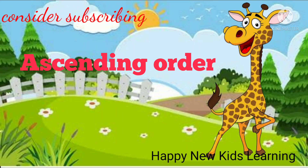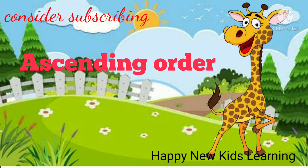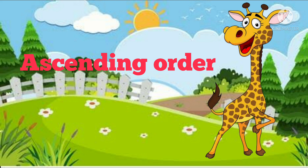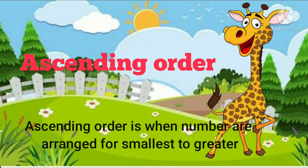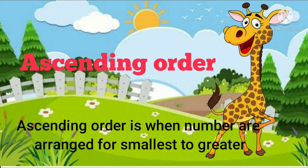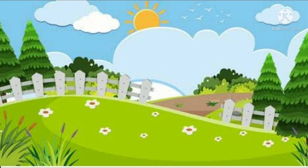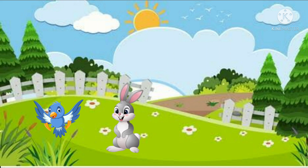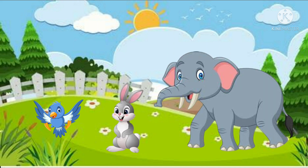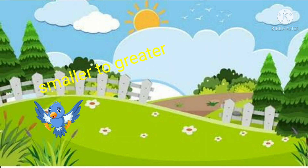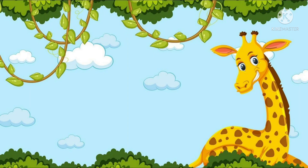Hello everyone, welcome to Happy New Kids Learning! Today we are going to learn about ascending order. Ascending order is when numbers are arranged from smaller to greater. Take for example a bird, rabbit, and an elephant — they are arranged in an increasing order of their size, that is smallest first and the greatest in the end.